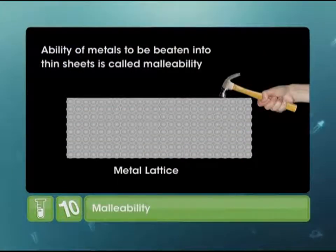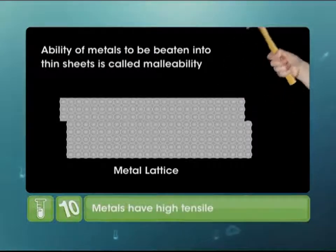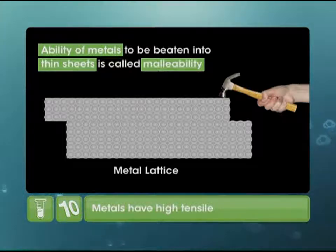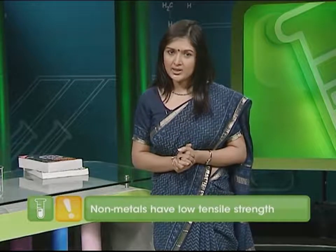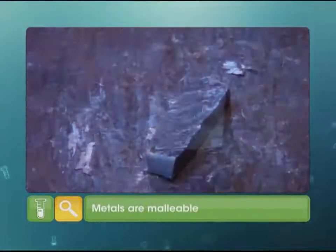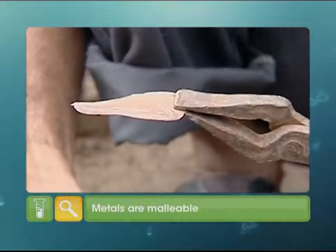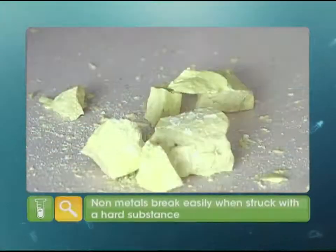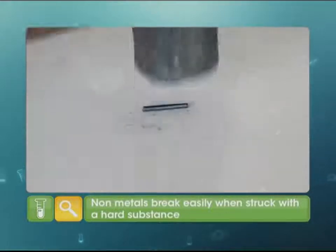We use metals in so many shapes and sizes. Ever wondered how they can be molded into different shapes? This property is called malleability, and it can be explained on the basis of the ability of metals to withstand a high degree of stress — in other words, they have high tensile strength. Non-metals, however, have low tensile strength, so they can't be beaten into sheets and break easily. These pieces of iron, copper and zinc can be beaten into sheets when struck with a hammer. They also produce sound when struck with a hard substance. On the contrary, non-metals like sulfur, iodine or graphite break easily when struck.